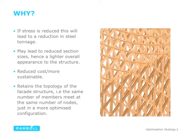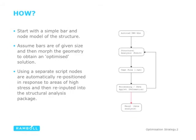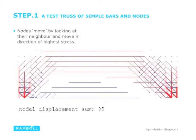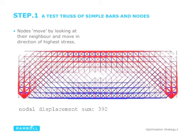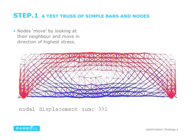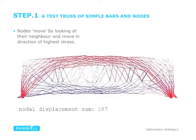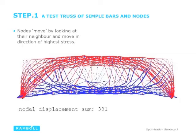The same number of members meet the same number of nodes, just in a more optimized configuration. The nodes are allowed to morph and move towards areas of higher stress automatically. The calculation is repeated and repeated and the structure automatically regenerates to a more efficient form. An animation of a simple 2D truss shows this — it automatically regenerates in relation to the stress in the nodes and assumes the form of a tied arch rather than a 2D truss, a more efficient form.